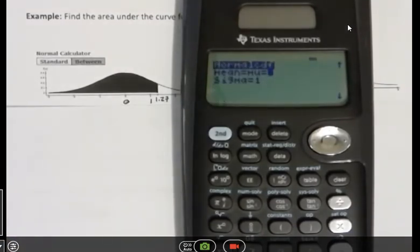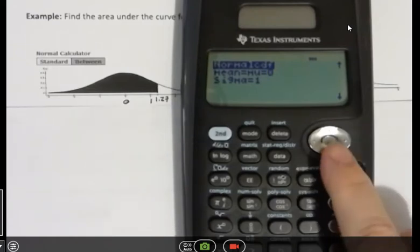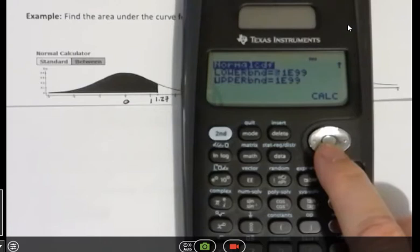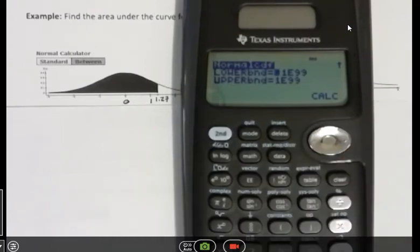The default on your calculator is the mean is going to be zero, and the standard deviation is going to be one. So that's what we want. So that's good. So I'm going to just scroll down until I get to the next thing, and it's going to say lower bound and upper bound.